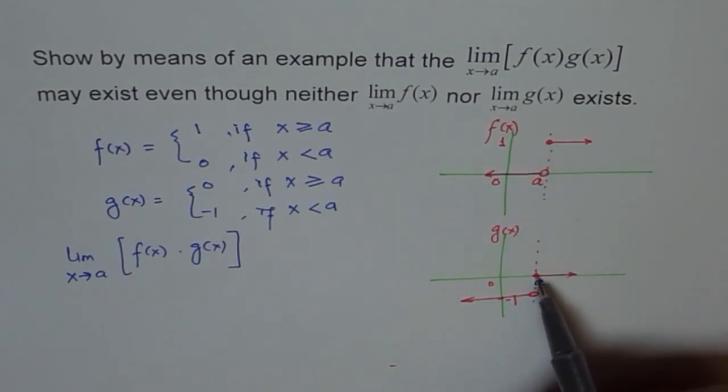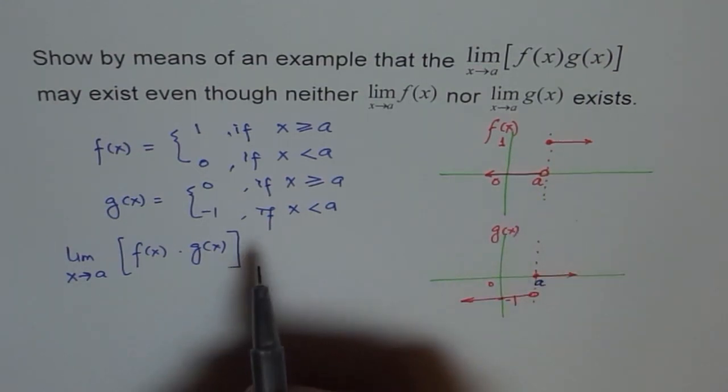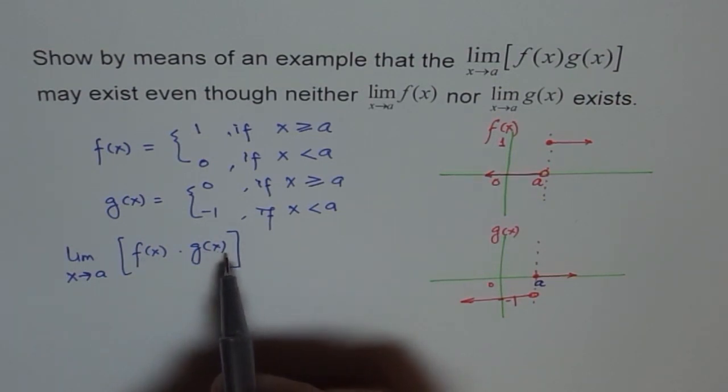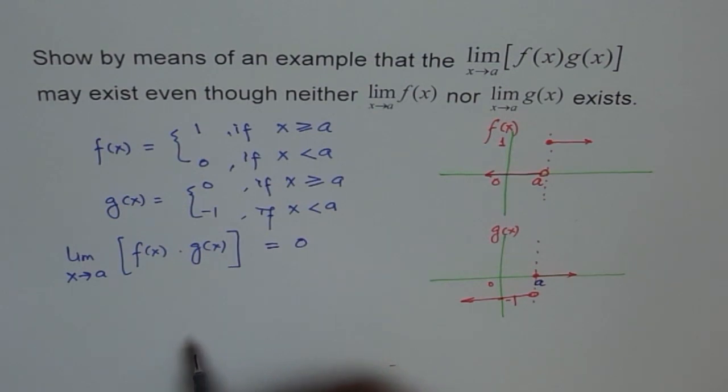So if you multiply, then one times zero becomes zero, so it is zero here. And on this side, it is minus one times zero, so it's zero. So basically, f(x) times g(x) is a zero function. So for the limit at a, yes, the limit is zero. The limit exists and it is zero for a.